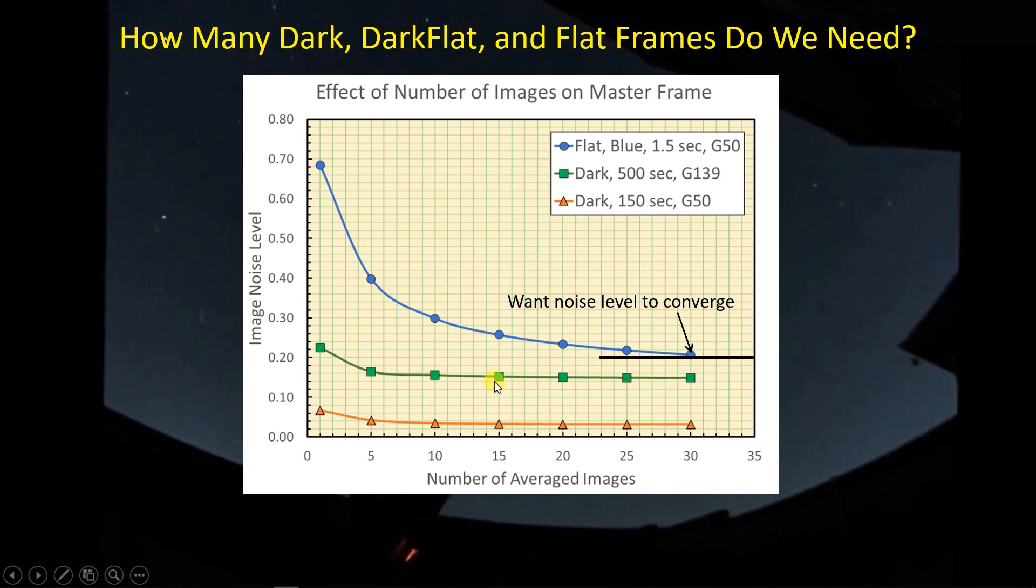At least with this cooled sensor that I'm using with my ASI 1600. After I've averaged together 15 or 20 frames, I've pretty much fully characterized the noise level in whichever dark set I'm using, whether the 500 second gain 139 dark set or the 150 second gain 50 dark set.